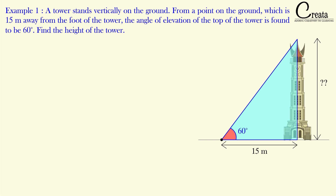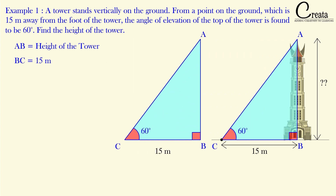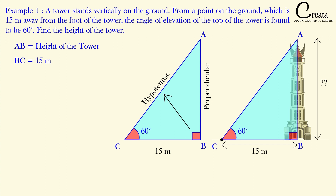Let's make a right angle triangle out of the given scenario. We name this triangle ABC. AB is the height of the tower — that is what we need to find. Angle C is given as 60 degrees. Angle B is 90 degrees. BC, the base, is given as 15 meters. So AC will be the hypotenuse in this case, and the third remaining side BC is the base.